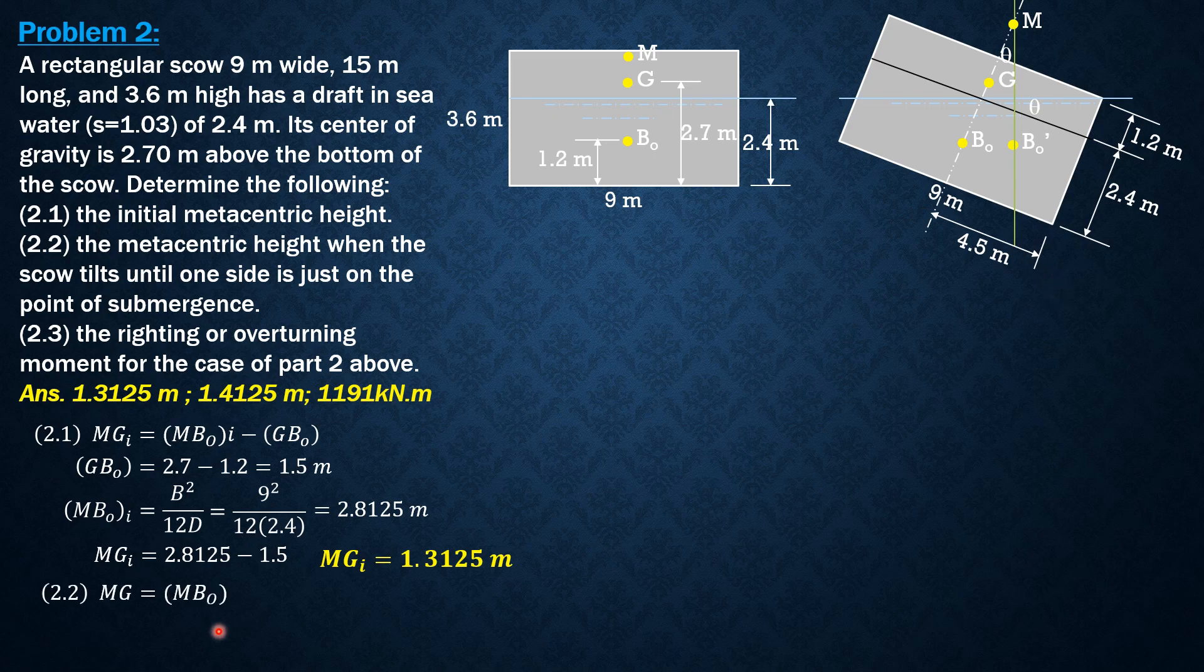This is also the angle theta, so tan θ is 1.2 over 4.5 meters. MG is MB₀ minus GB₀. GB₀ is still 1.5.